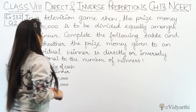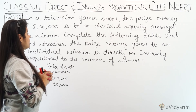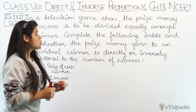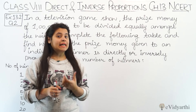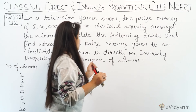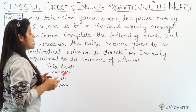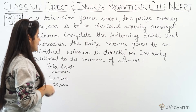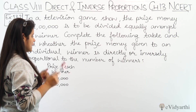In this question, in a television game show, the prize money of 1 lakh is to be divided equally amongst the winners. Complete the following table and find whether the prize money given to an individual winner is directly or inversely proportional to the number of winners.